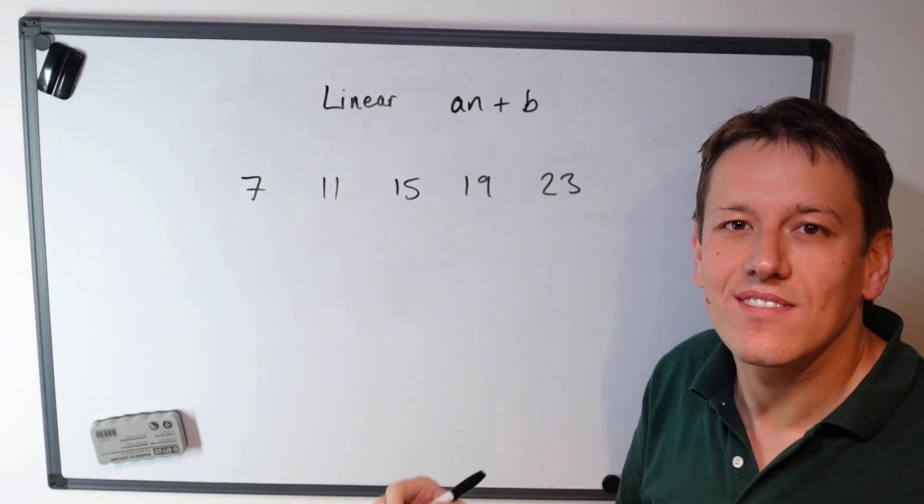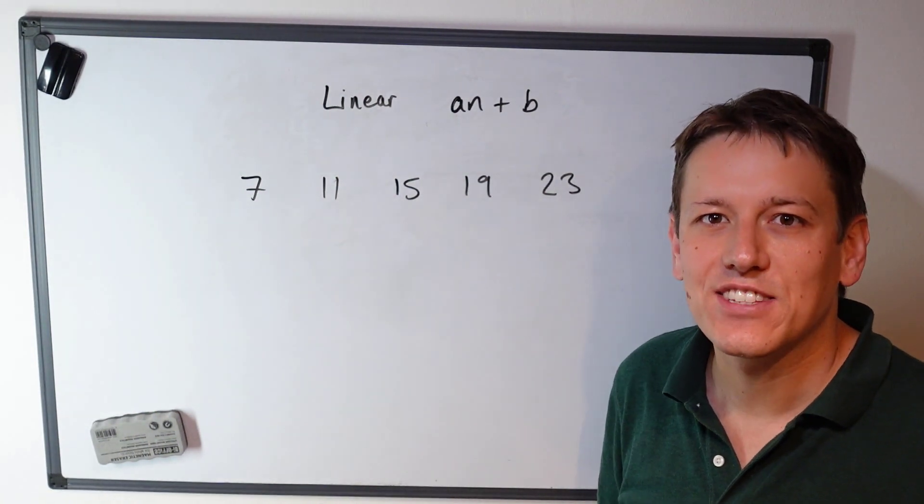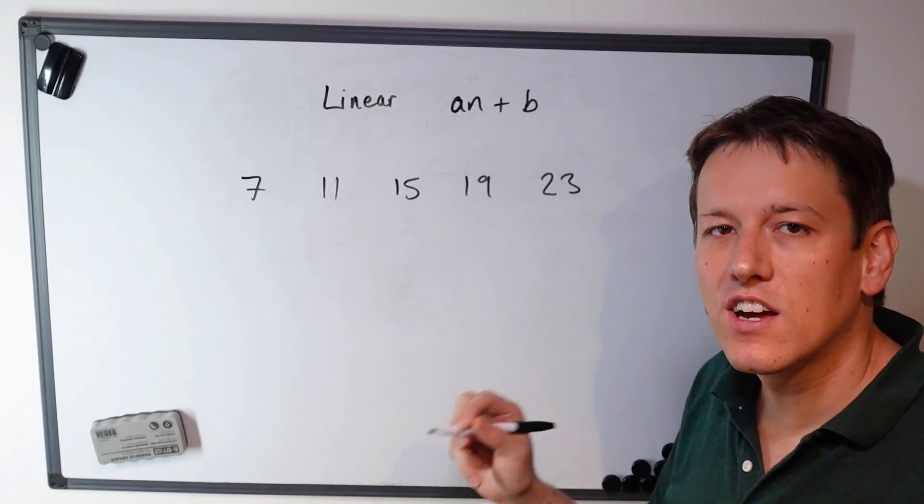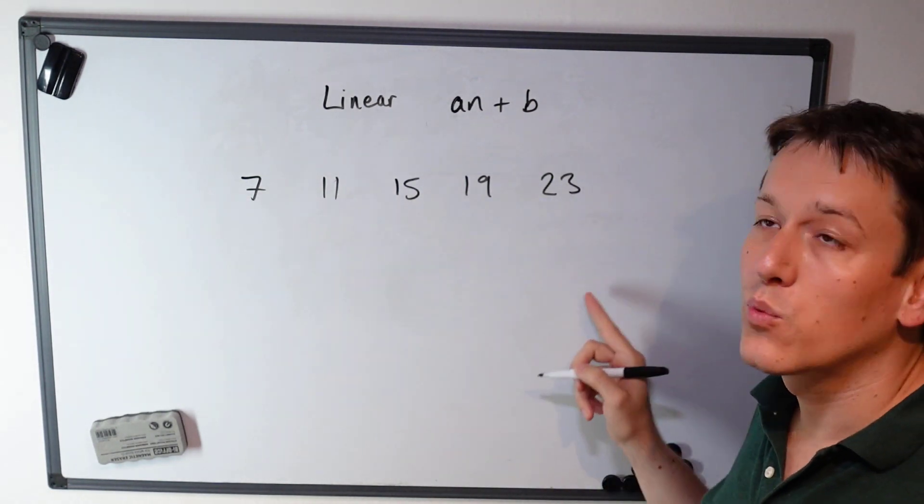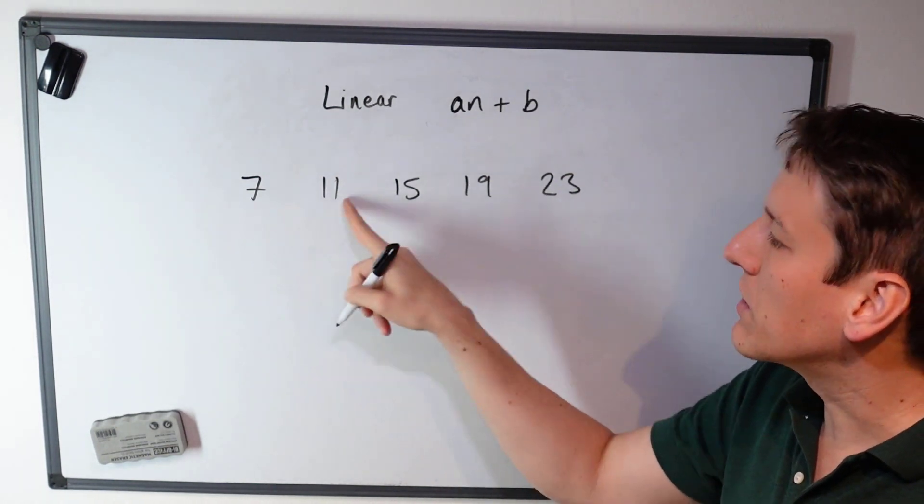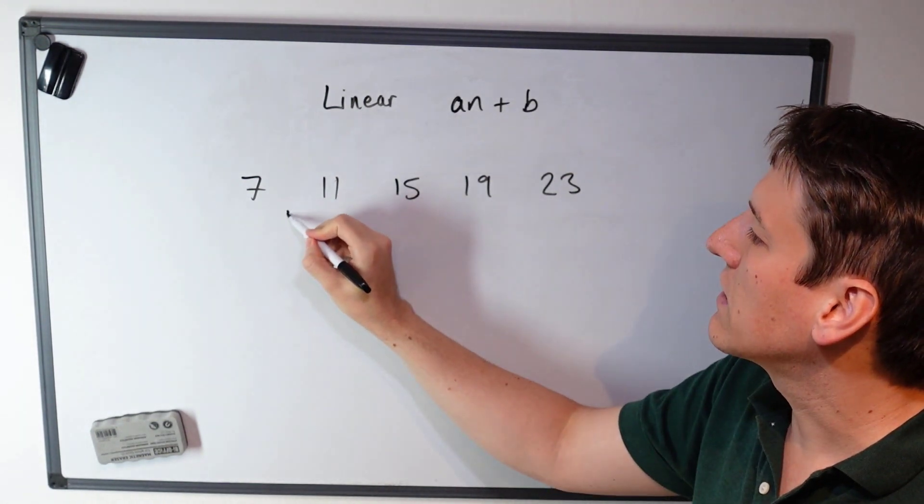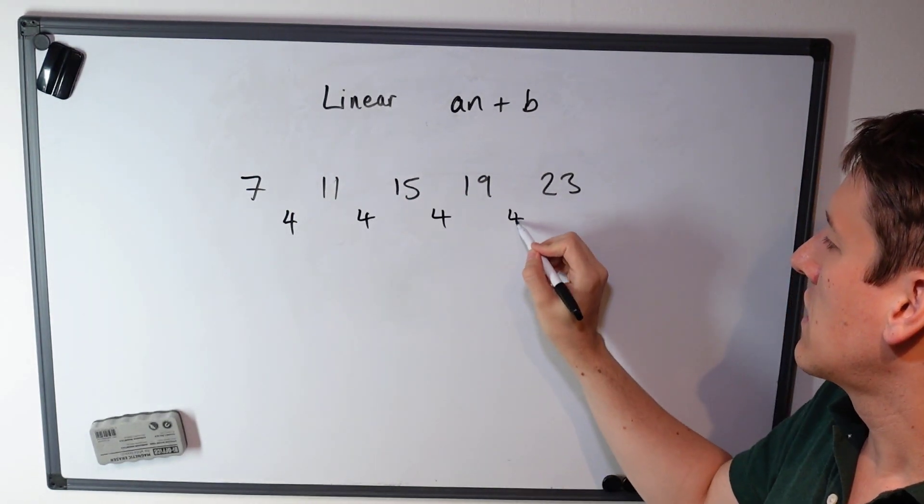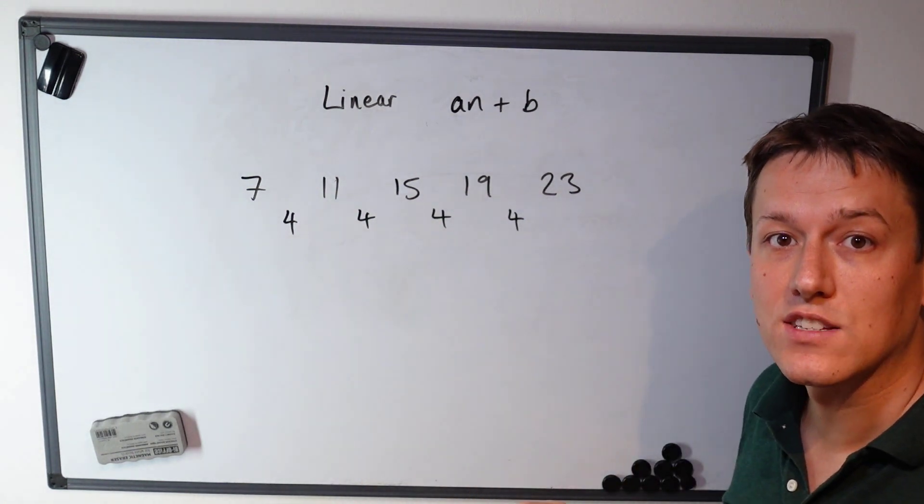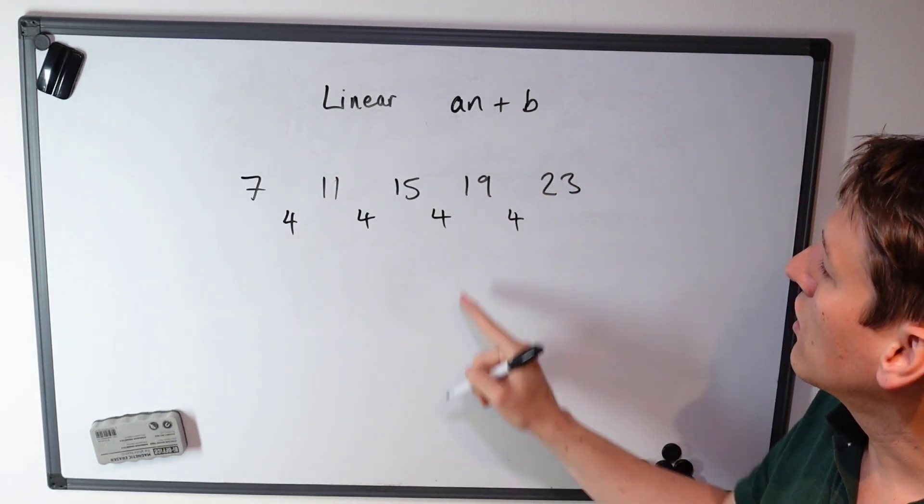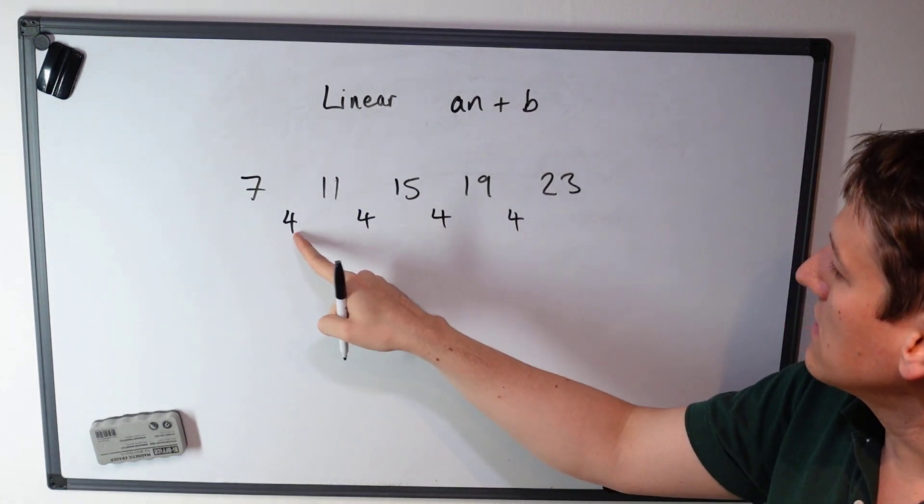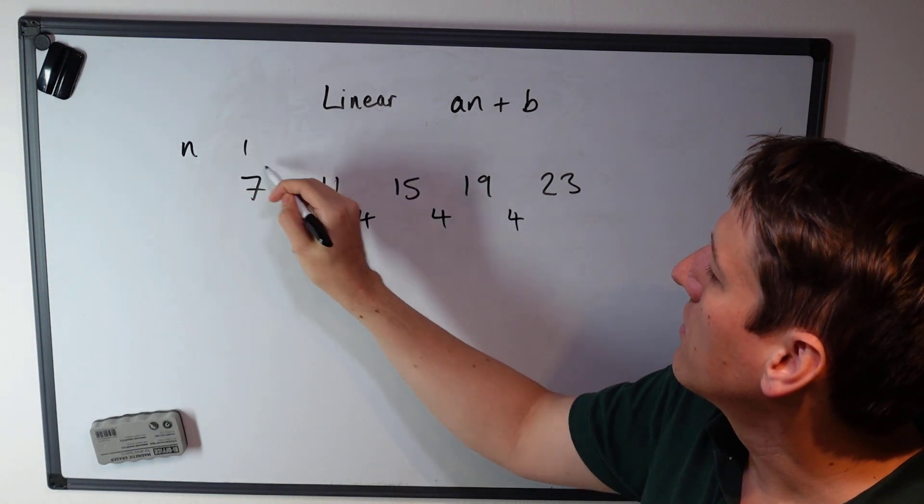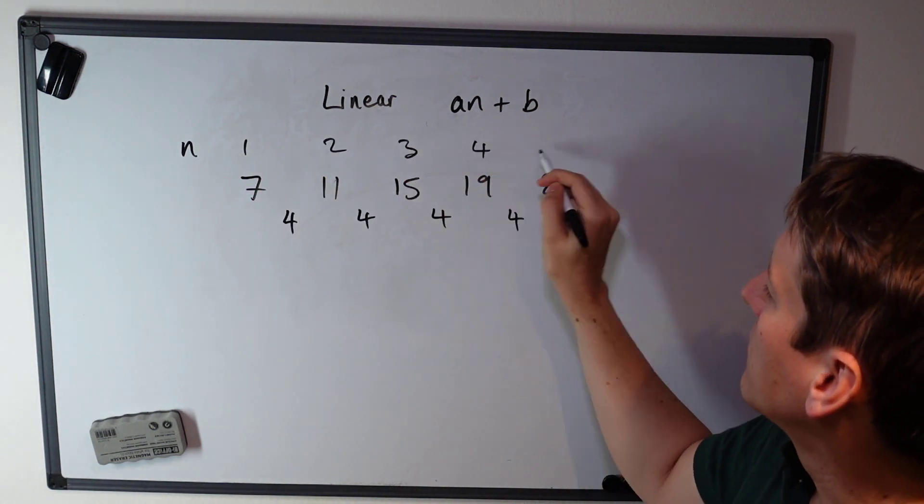So for a linear sequence, some think of the form a times n plus b, we know that to find the nth term definition for the sequence, we take the first difference of the sequence. We look at the differences between each of the numbers here: 11 minus 7 is 4, 15 minus 11 is 4. When we get that this first difference is constant, we know that the a in an plus b is equal to this number here. So this sequence here, if this is the term number 1, 2, 3, 4, 5...